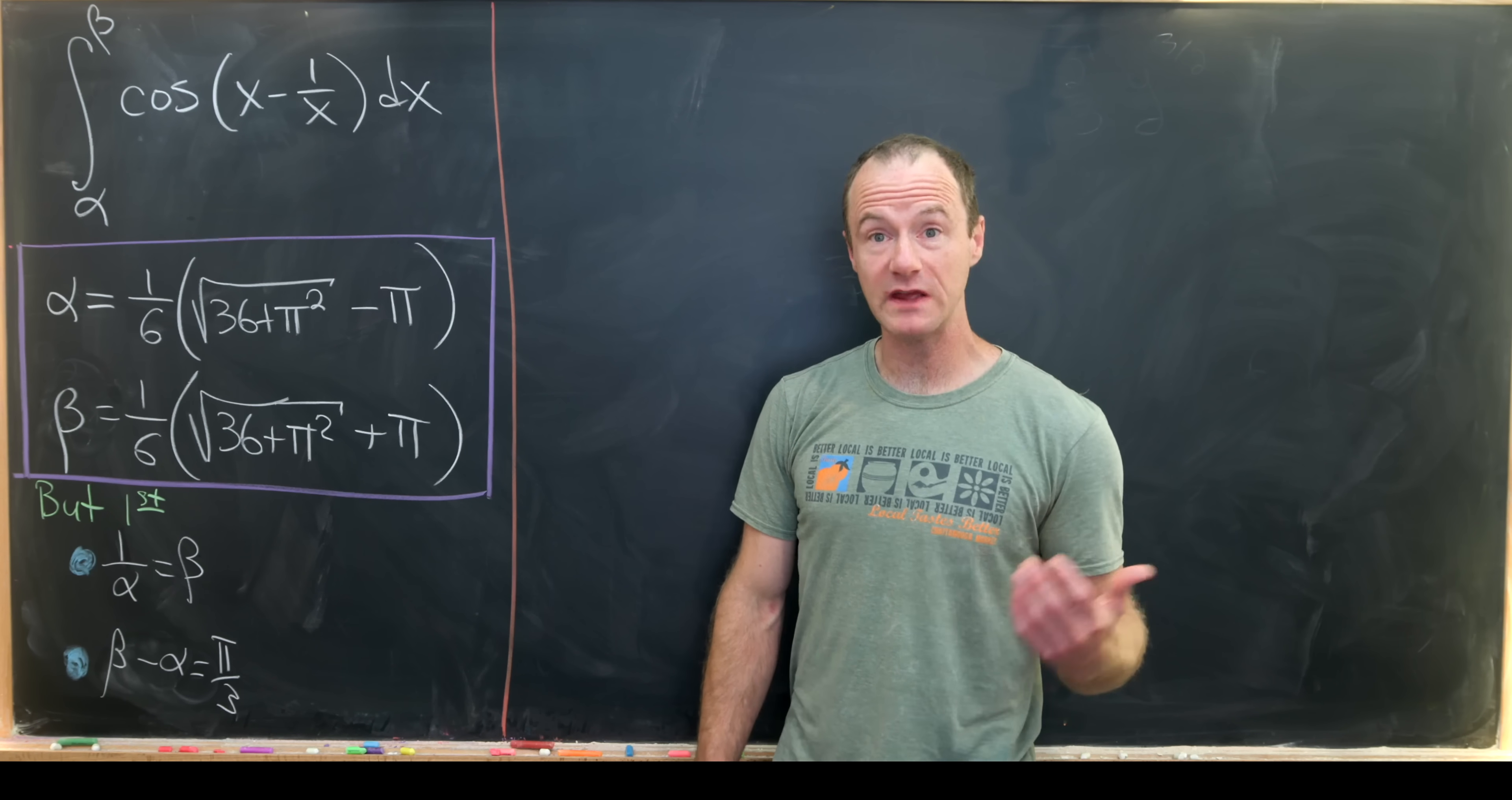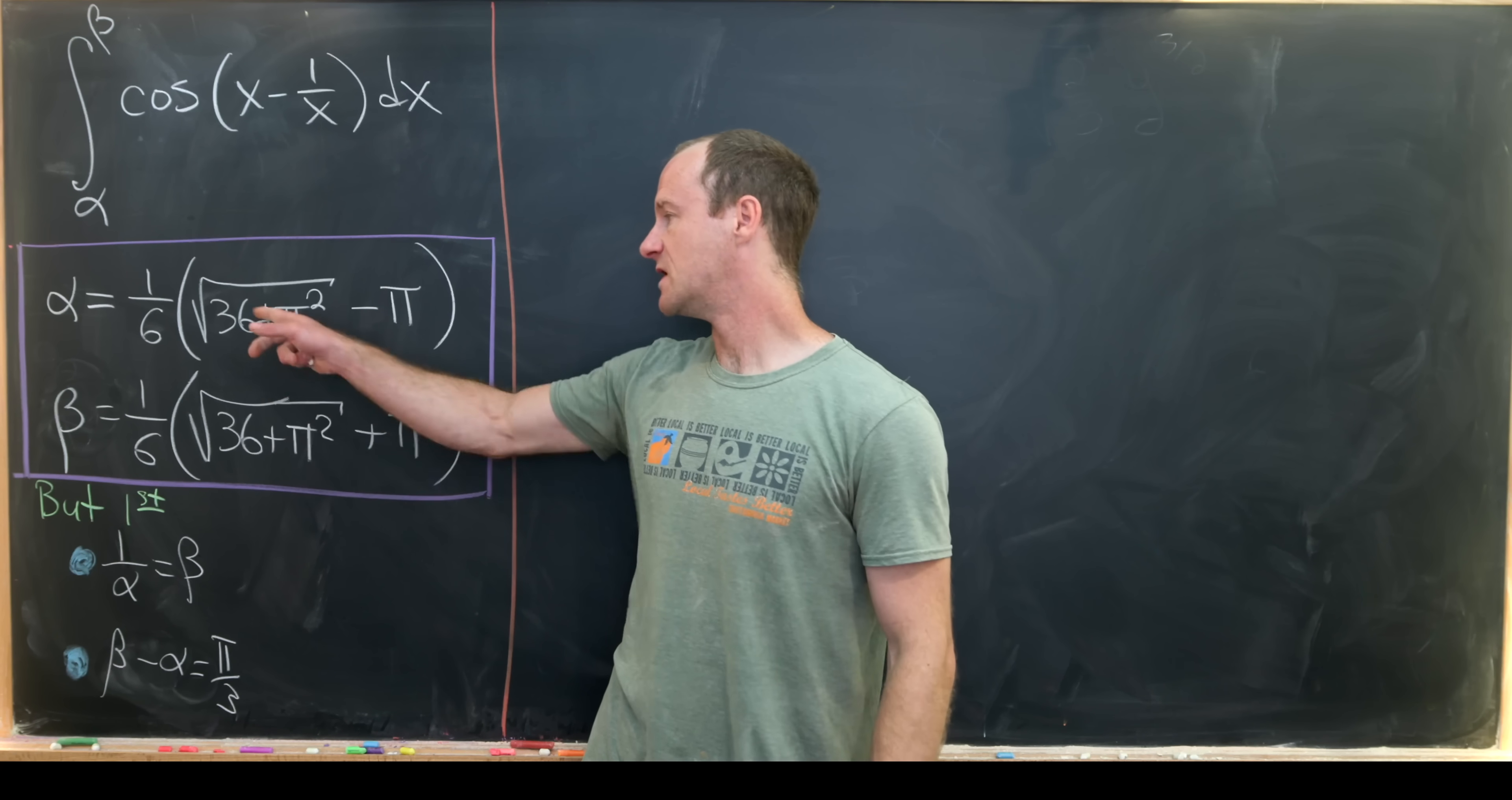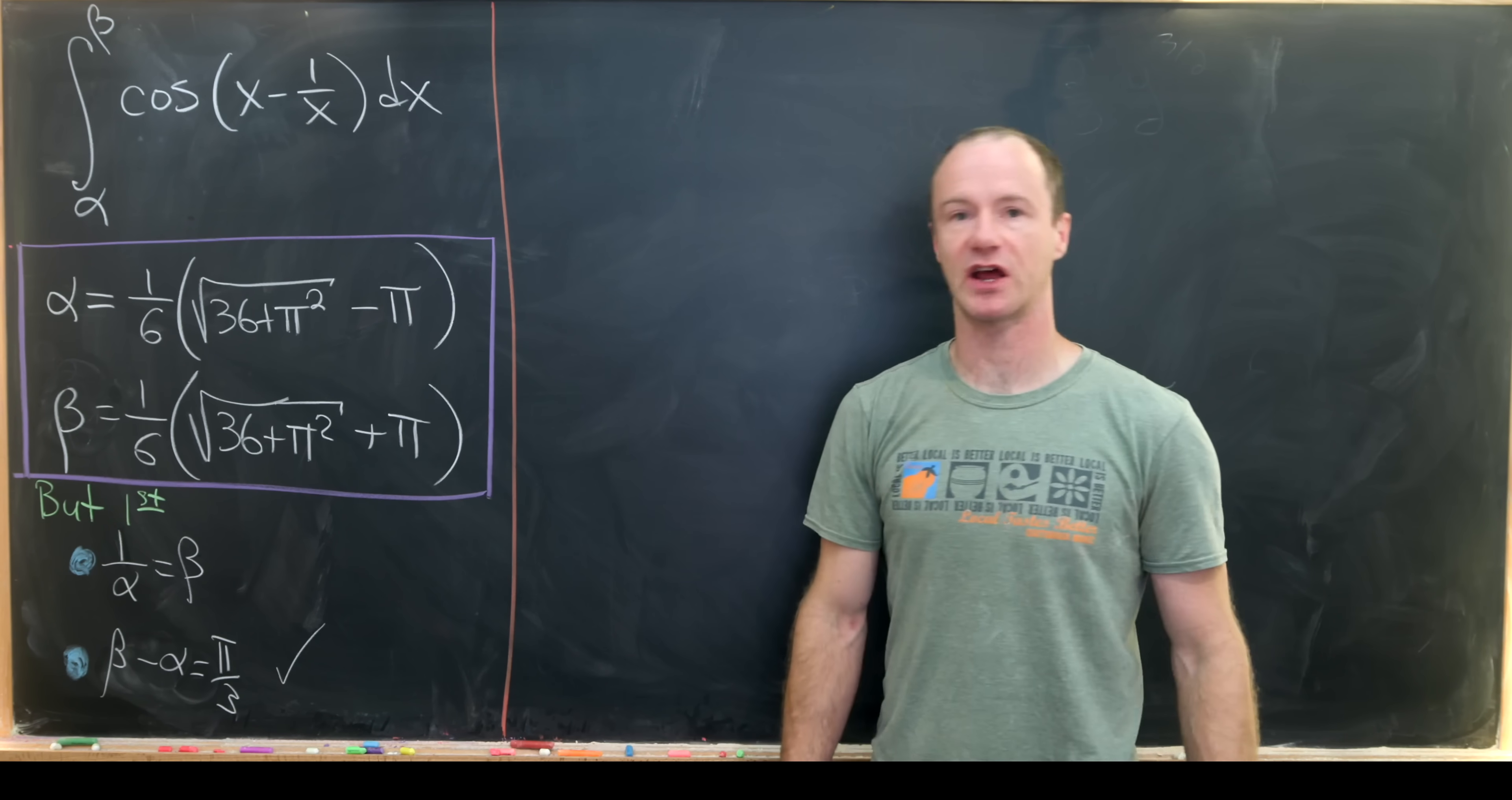But maybe before we even do that let's notice that beta minus alpha is pi over 3. And I won't even do that kind of by hand because we can really just see that. Notice beta minus alpha will cancel this square root stuff and leave us with pi minus negative pi. So that's 2 pi over 6 which is pi over 3.